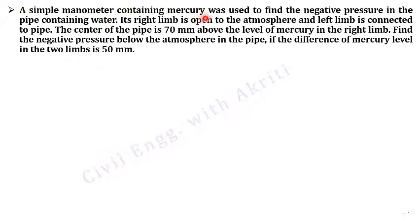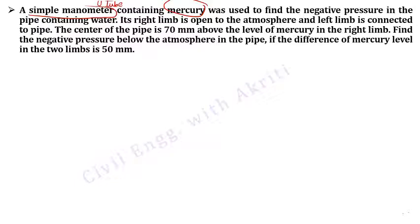A simple manometer containing mercury was used to find the negative pressure in the pipe containing water. Its right limb is open to the atmosphere and left limb is connected to the pipe. The center of the pipe is 70 mm above the level of mercury in the right limb. Find the negative pressure below the atmosphere in the pipe if the difference of mercury level in the two limbs is 50 mm. The manometric liquid is mercury, it's a simple (U-tube) manometer, and the pressure is negative — meaning vacuum pressure, less than atmospheric.